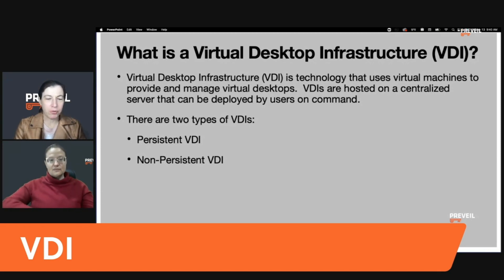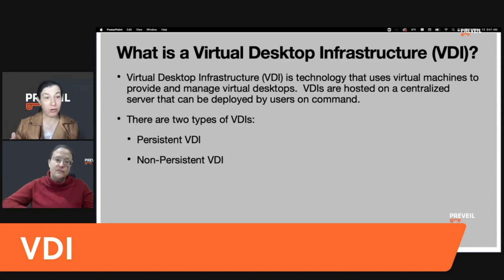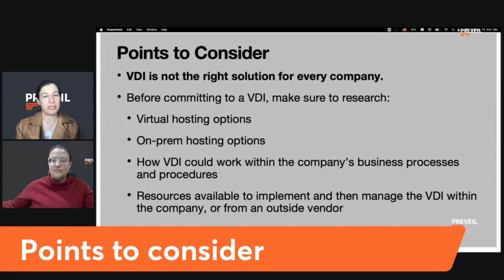The way this connects to CMMC and the protection of CUI is: you're trying to have an enclave in which you protect CUI, and you put it on a Virtual Desktop Infrastructure so that server is the only place where CUI lives. That's one way some people figure out how to put CUI in an enclave, and it might work for some — your mileage may vary.